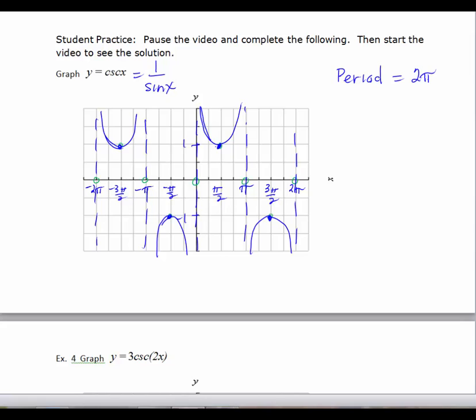The period equals 2π. The domain is x cannot equal kπ. In this case, k is an integer.